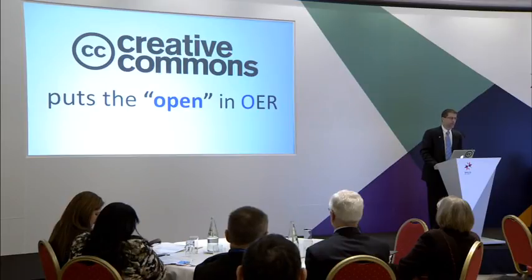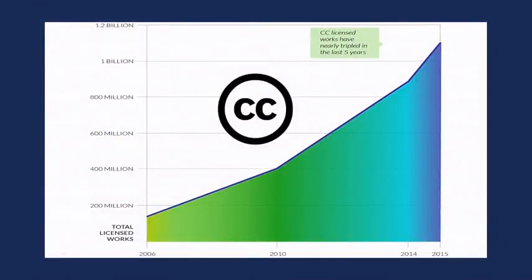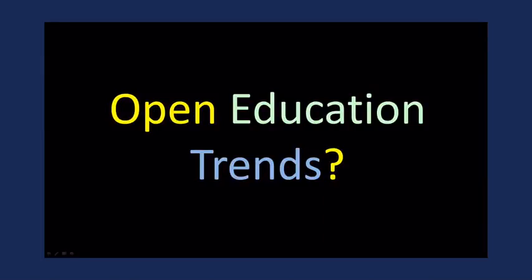Creative Commons puts the open in OER because OER is CC licensed. In terms of growth, we're right around 1.5 to 1.6 billion licensed works on the web, and as you can see, the slope is increasing. We're getting new data from Google, Bing, Baidu, and other search engines, and we expect the numbers to be much higher this year.